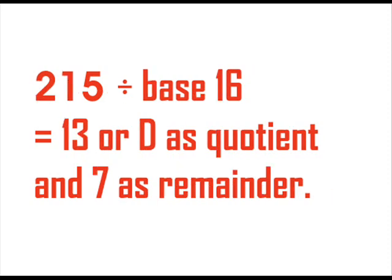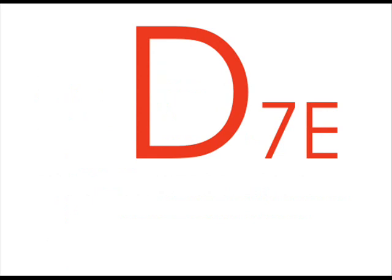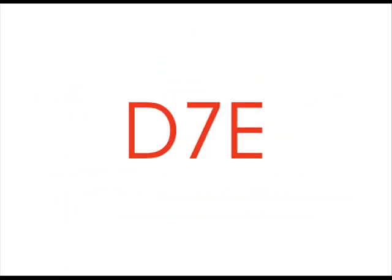Divide again 215 by 16 and we get 13 or D as the quotient and 7 as the remainder. Now if we write side by side from last quotient to first remainder we will get D7E. This is hexadecimal or hex equivalent of decimal 3454.